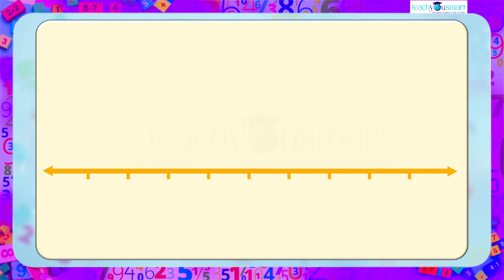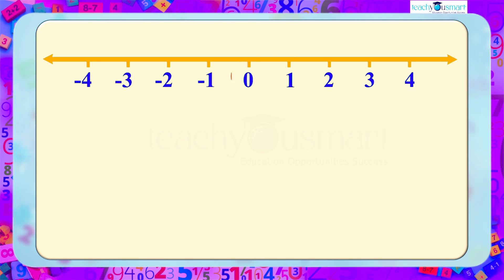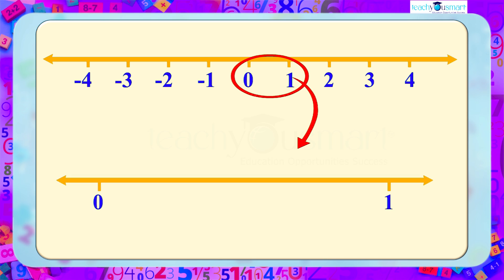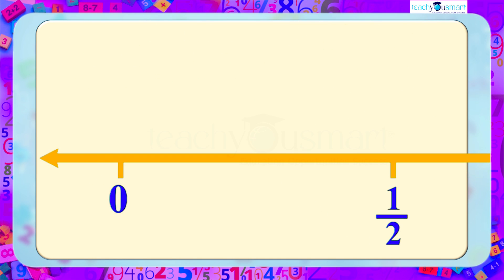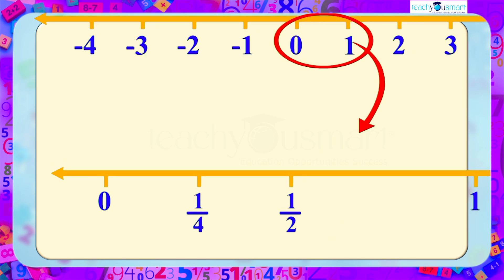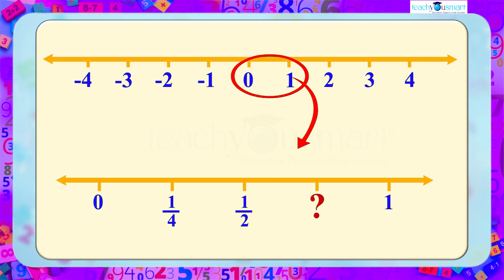For example, between 0 and 1, there is a rational number 1/2, which is the midpoint of both 0 and 1. Between 0 and 1/2, the midpoint is 1/4. Then, what about the midpoint of 1/2 and 1? How can we find it?